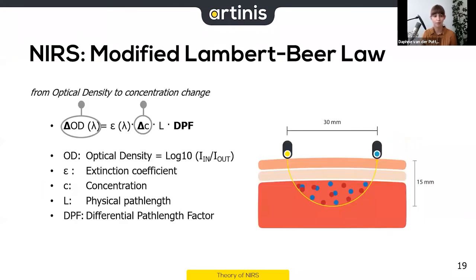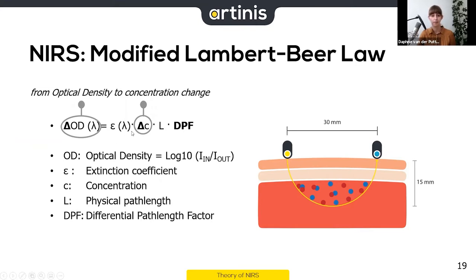Let me briefly explain what each symbol in the modified Lambert Beer Law means. First, delta OD is the change in optical density, which depends on wavelength — so it's calculated per wavelength, which is what lambda represents. Then we have the extinction coefficient, which is a constant for both oxy- and deoxyhemoglobin, also per wavelength.